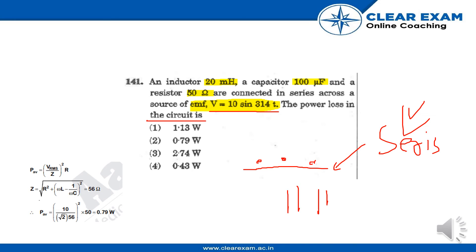For that we can use the formula of power, that is P = (V_rms/Z)² × R, where V_rms is root mean square voltage. From this we can say that we need to find the value of Z.